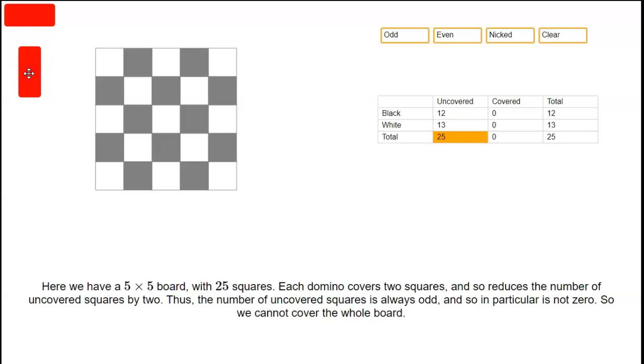This demonstration is about the problem of covering chess boards or parts of chess boards with dominoes. Here we have a 5x5 board with 25 squares and we're going to try and cover it with dominoes like this.